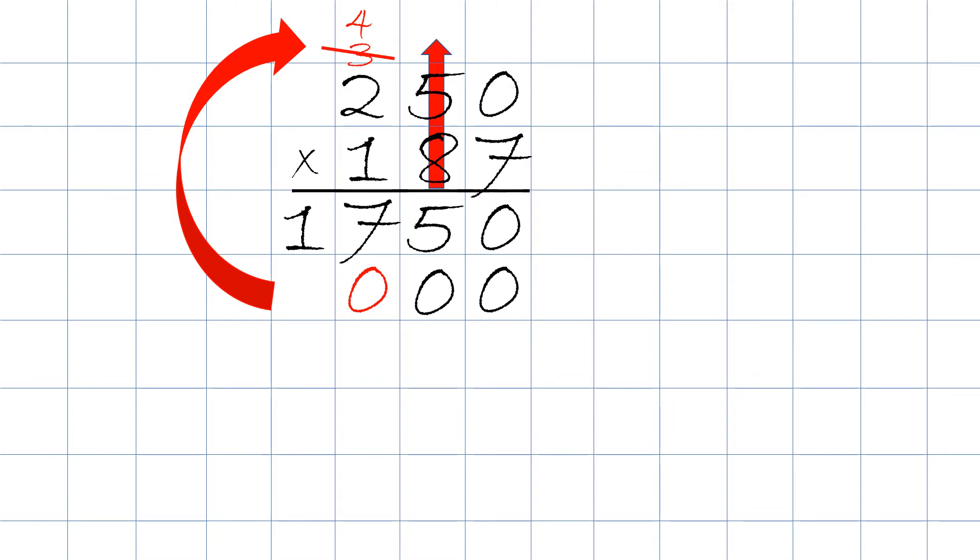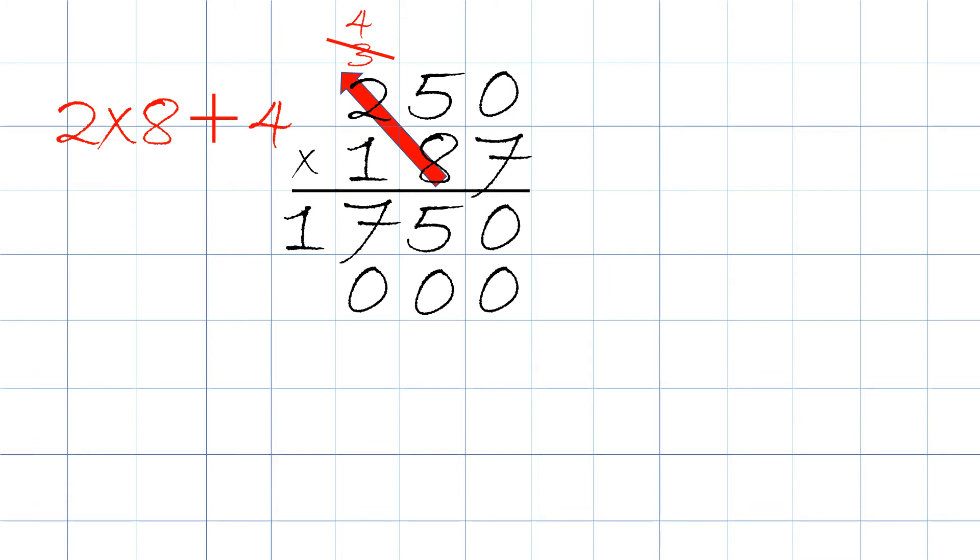We then take eight times two, which is 16, plus the four on top, and that's going to give us 20. Both the digits, the two and the zero, we write up here.